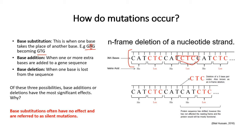In the case of the paper reported by Bilal Hussain, it is still a functional protein, but in many cases that is not so. Of all three possibilities, base substitutions are the ones most likely to have no effects and are often referred to as silent mutations.